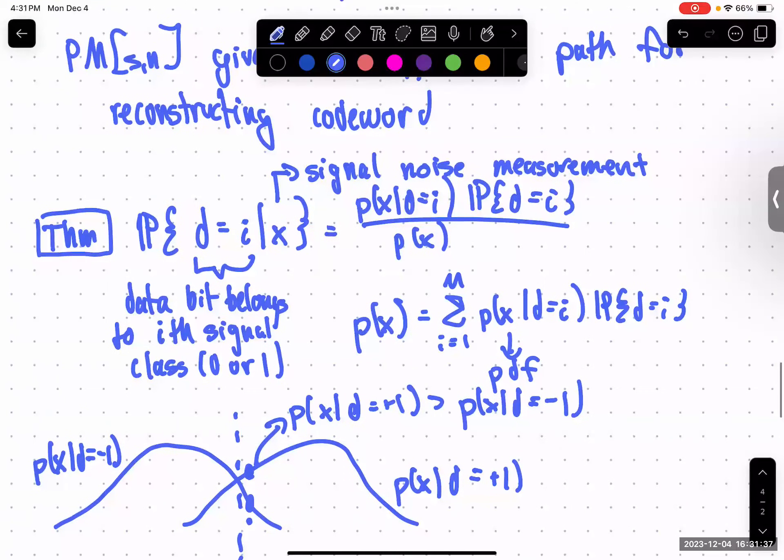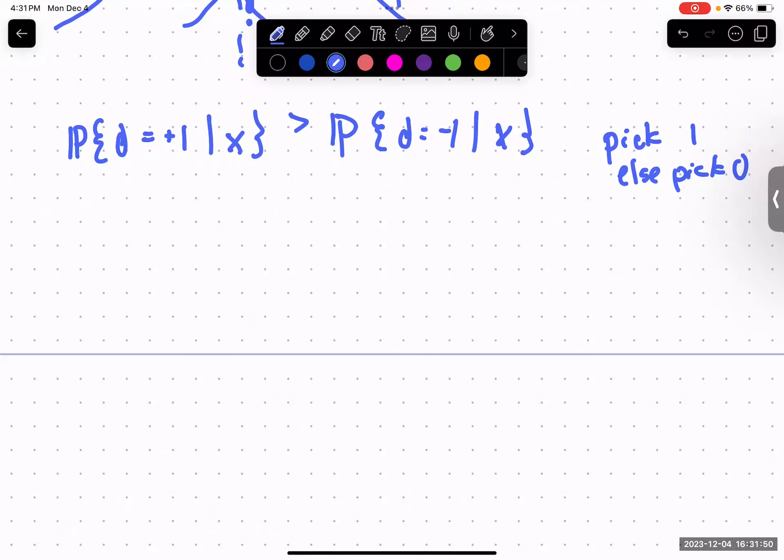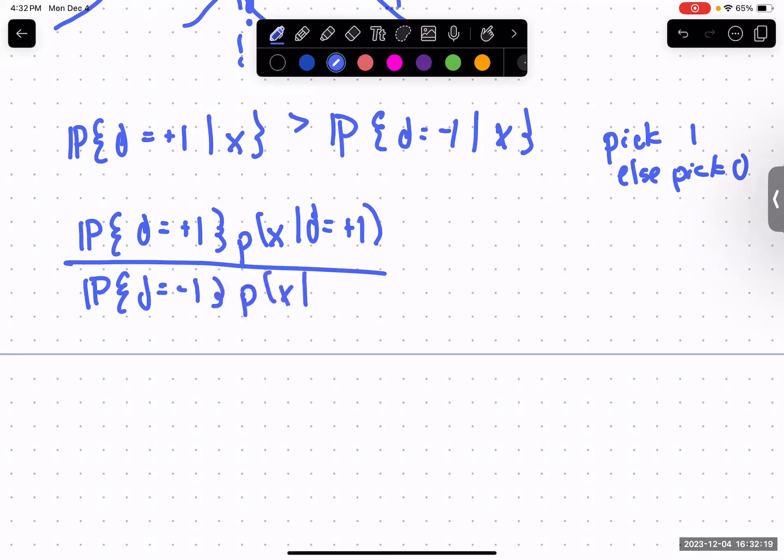So we know that we have this property. So we want to somehow use this idea of like likelihood estimation to improve our decoding. And then there's one other kind of estimation, which you might remember from 361 if you've taken it, which is MAP estimation, which is where we have, we want to check if the probability that d equals plus one given the current noise is greater than probability d equals minus one given the current noise. So we want to check which of these is greater, right? Because if the probability that it's one is greater than the probability that it's negative one, then we'll pick one else we would pick zero, right?